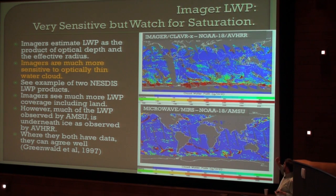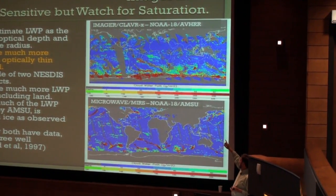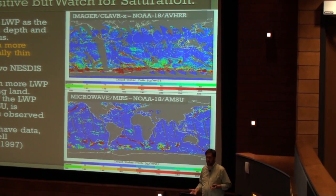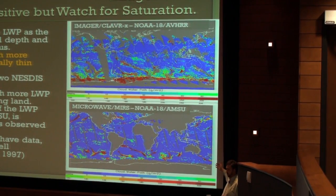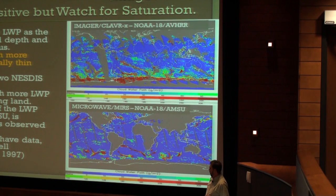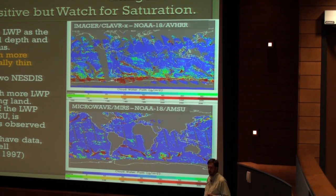You can tell a couple things about how the imager liquid water path and the microwave liquid water path compare. First, this is a daytime-only product for the imager — it's getting late in the year and we don't have sunlight in the hemisphere. Also, you can see a lot of gaps: we don't see through ice clouds. We can't really profile water paths or water contents. The microwave at bottom doesn't work over land, only over the ocean — it gives a very continuous field, but misses a lot of big clouds. Where they both see data at the same time, they agree very, very well.